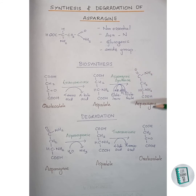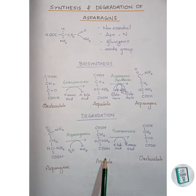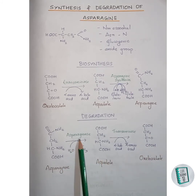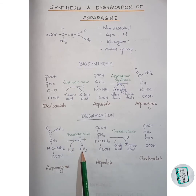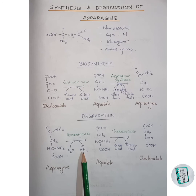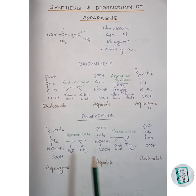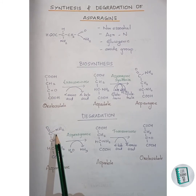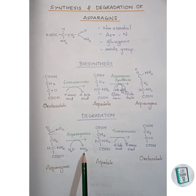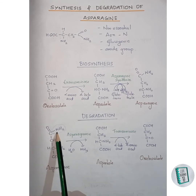Now let us move on to the degradation of asparagine. Asparagine gets converted to aspartate by the enzyme asparaginase. A water molecule cleaves the NH3 molecule and releases it. One of the hydrogens along with the NH2 leaves as NH3.